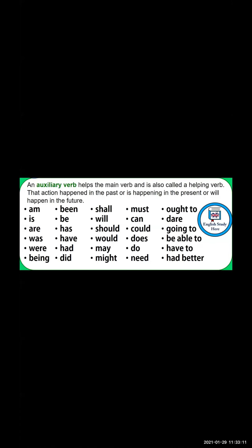What is the auxiliary verb? Auxiliary verb means it helps the main verb, and it is also called a helping verb. The auxiliary verb is utilized to help the main verb. What is our main verb? The action word — like drinking, roaming, laughing, eating, talking — this is our main verb. When you make sentences, we need a helping verb. This helping verb also shows the tense — whether it is past tense, present tense, or future tense. So at that moment, the helping verb plays a vital role.